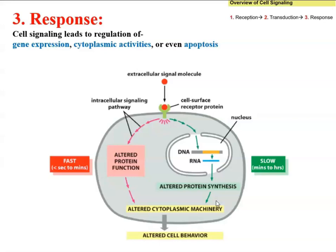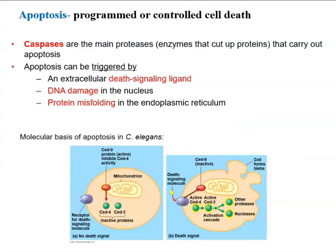Another type of response that cell signaling can lead to is apoptosis. Apoptosis refers to programmed or controlled cell death. Cells normally have specific enzymes that can break down proteins, nucleic acids, lipids, and all macromolecules. Apoptosis can be triggered by death signaling ligands that are extracellular, or sometimes by an internal mechanism — because the cell has accumulated too much DNA damage and has too many mutations.